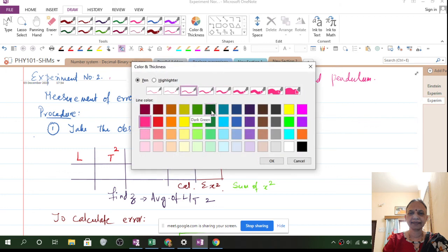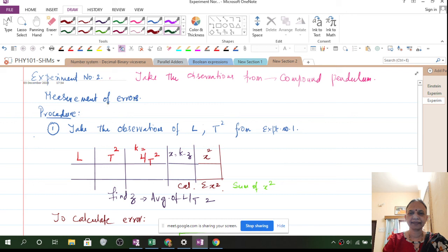Take a little darker color. So what you have to do here is L T square. Now represent L by T square with K. Find Z. Z is nothing but average of L by T square.